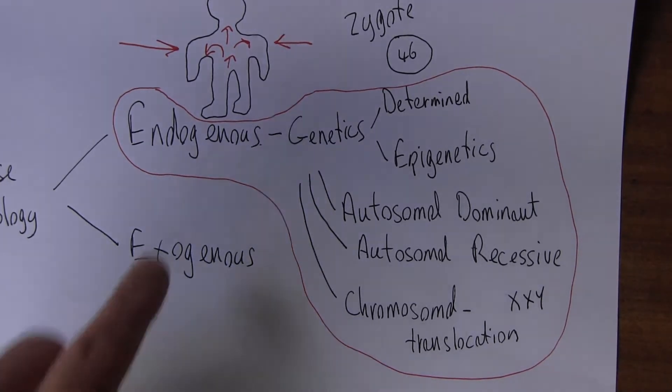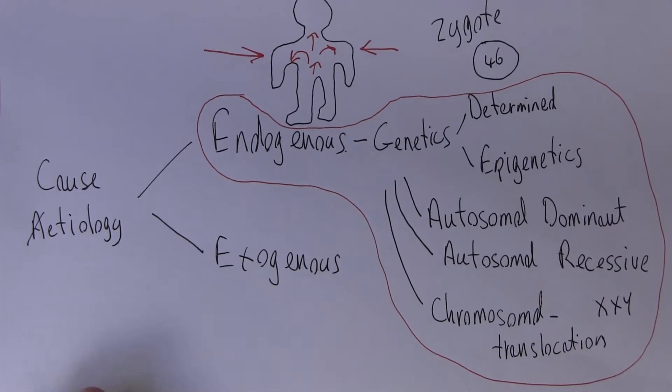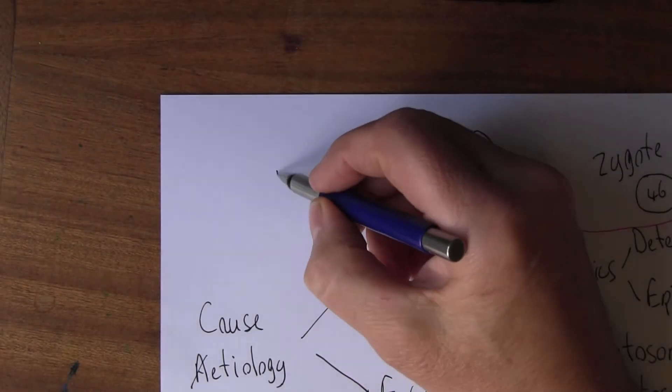We've considered endogenous factors, the genetic factors in causing disease. We now want to think about the exogenous factors. These are factors that affect the individual from the environment.